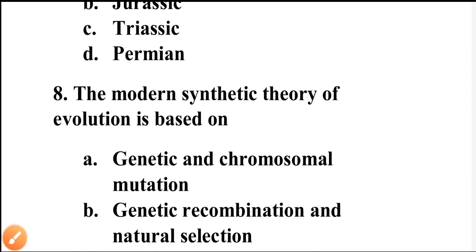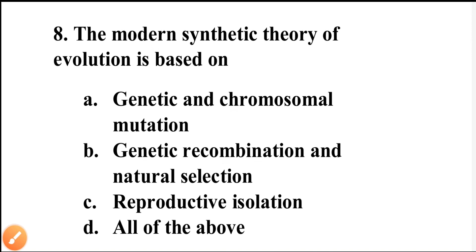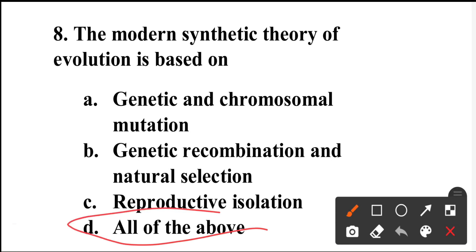Question number eight: The modern synthetic theory of evolution is based on what? The options include genetic and chromosomal mutation, genetic recombination and natural selection, and reproductive isolation. All three of these are correct components. So the answer is all of the above — option D is the correct answer.